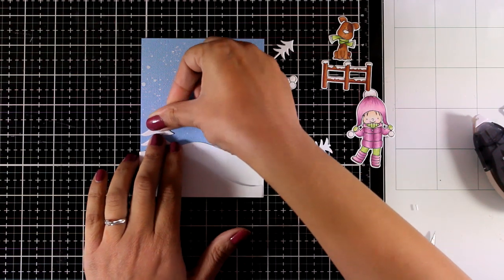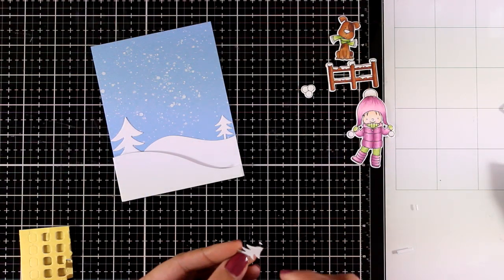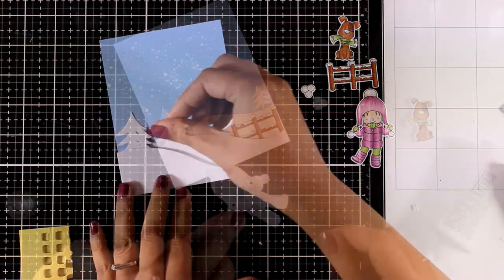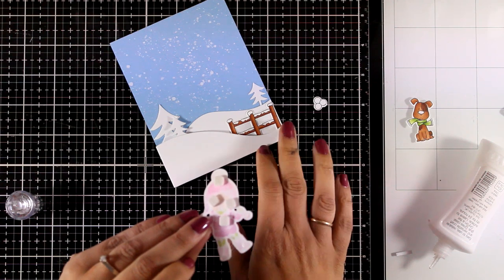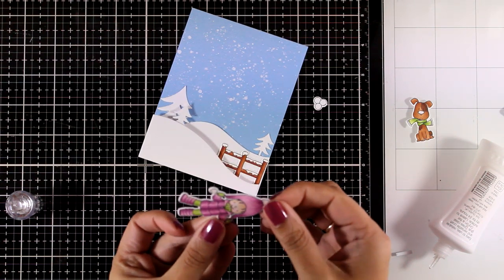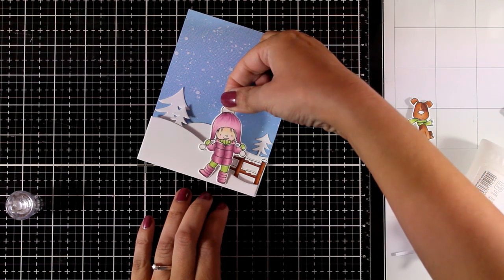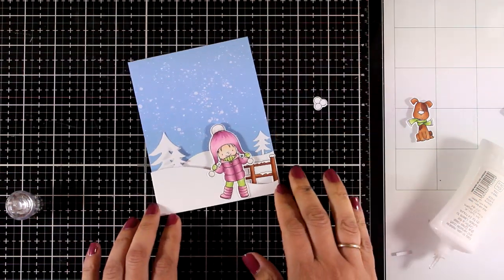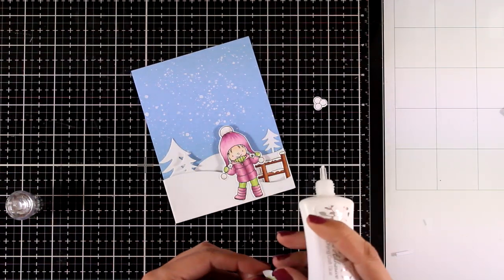And for others I'm going to use foam squares at the back like this little tree for more dimension. I place the fence flat in between the two slopes and now on top I'm going to place the little girl. She has foam squares at the top so she is leveled with the first layer of snow.